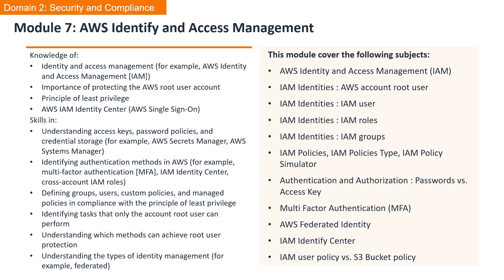We will identify specific tasks that only the account root user can perform, the principle of least privilege, IAM policy types and IAM policy simulator, authentication and authorization on the use of password and access key, various authentication methods in AWS including multi-factor authentication or MFA, AWS Federated Identity, and IAM Identity Center. And lastly, the two access policies available for Amazon S3.